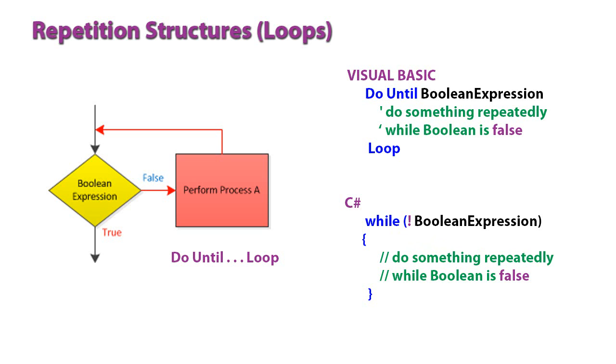It is possible in both a do-while and do-until loop that the process would never execute. For example, here in the do-until, if the Boolean expression equates to true, the process A is never performed.